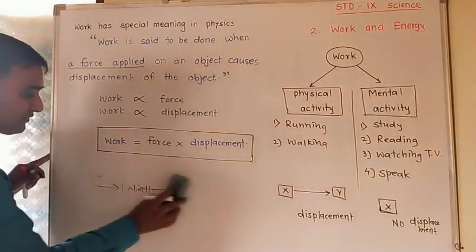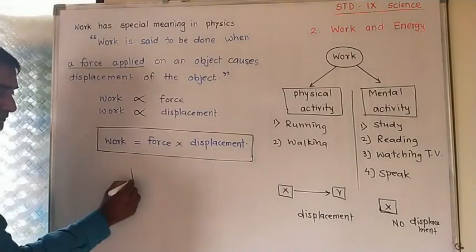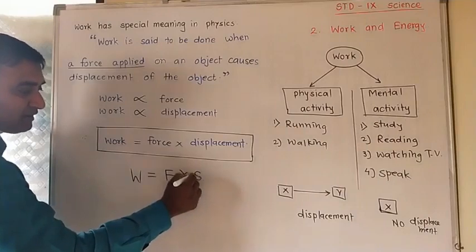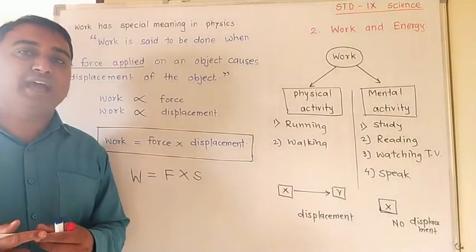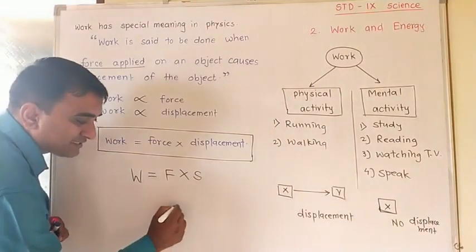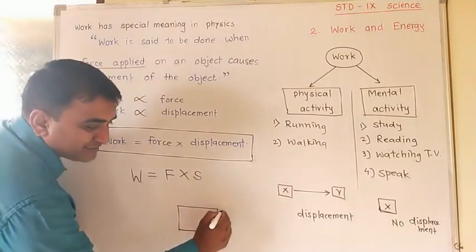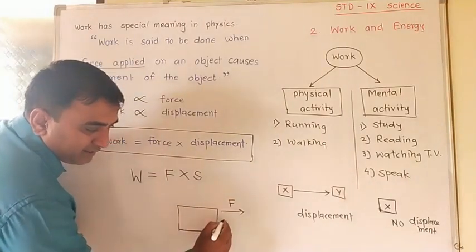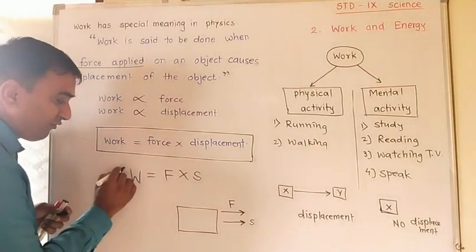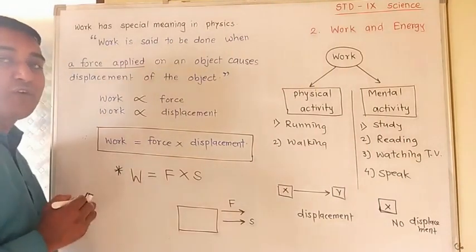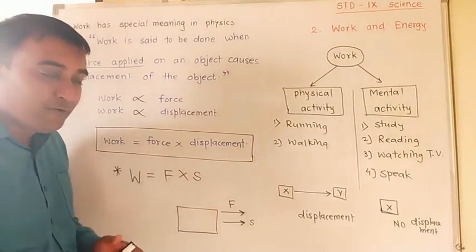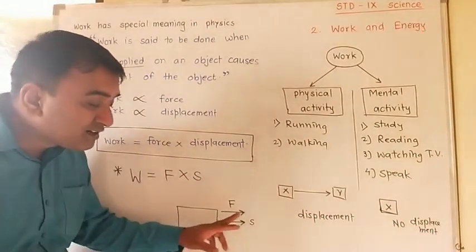So the formula is: Work is equal to force into displacement, or W = F × S. We use this formula when the force and displacement are in the same direction — that is, when force and displacement are parallel to each other.